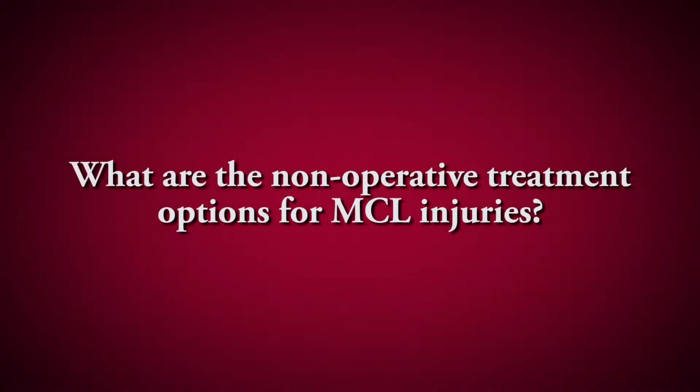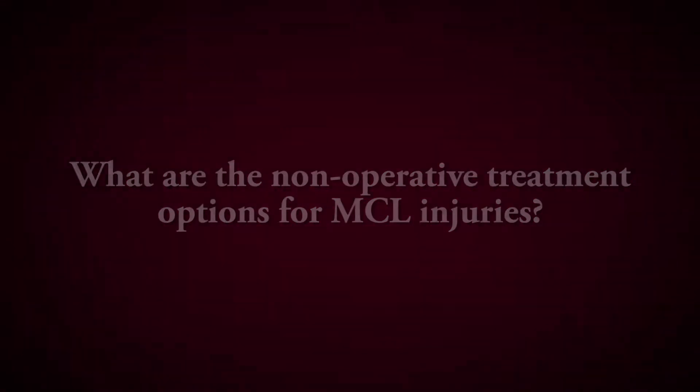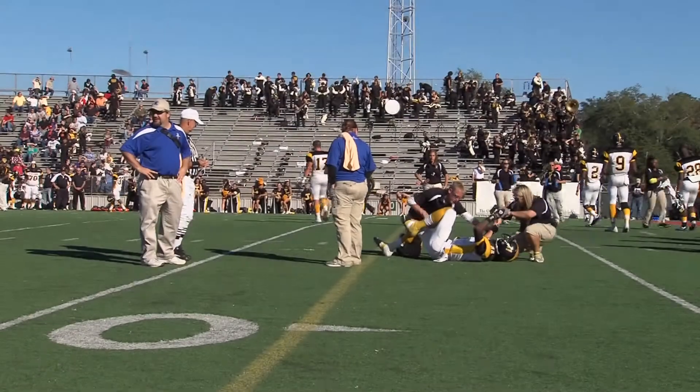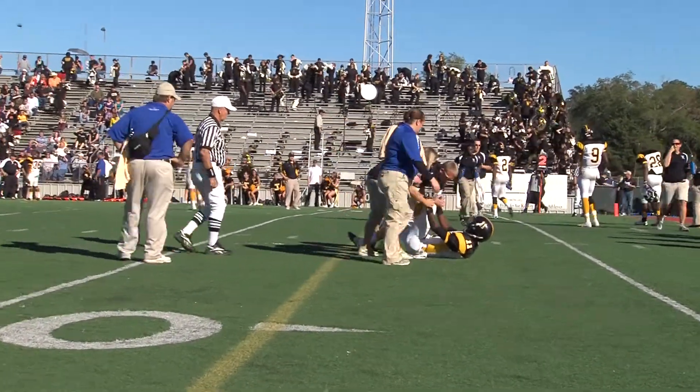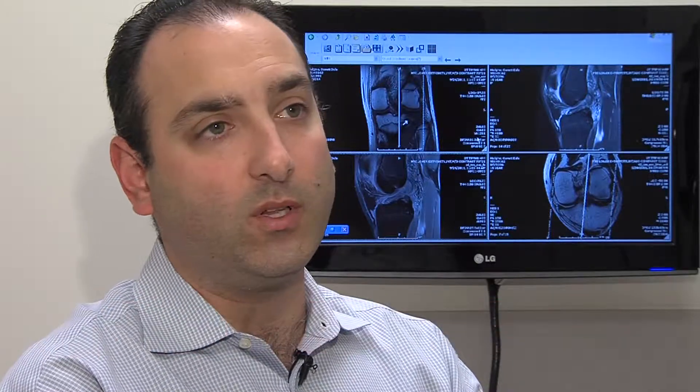Most medial collateral ligament injuries can be treated non-operatively. Typically, depending on the severity of the injury, the athlete can be placed in a brace. Usually they'll remain in the brace anywhere from two to four weeks, and as soon as the ligament has signs of healing, they'll be able to come out of the brace — typically going back to athletic participation within about four to six weeks.